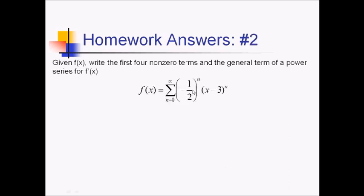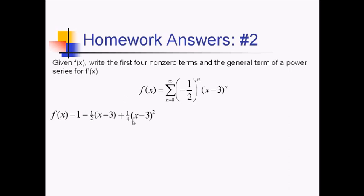For number 2, given f of x here as this series, we want to find f prime of x — first four non-zero terms and the general term. Let's start by expanding the series. So we've got our first term of just 1, because you're plugging in 0 for the exponent everywhere. After that, we have negative 1 half times x minus 3. Each time we're just multiplying by this as a common ratio. So positive 1 fourth (x minus 3) squared, then negative 1 eighth (x minus 3) cubed, and positive 1 sixteenth (x minus 3) to the fourth. And then the general term at the end.